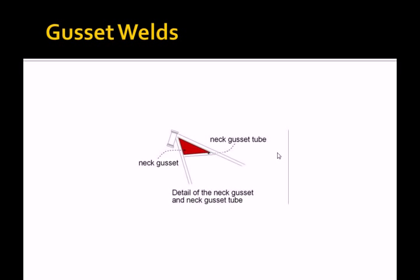The neck gusset tube is a tube welded to both the backbone and the bottom rails. The neck gusset is a flat piece of steel that connects all of this together, adding strength.